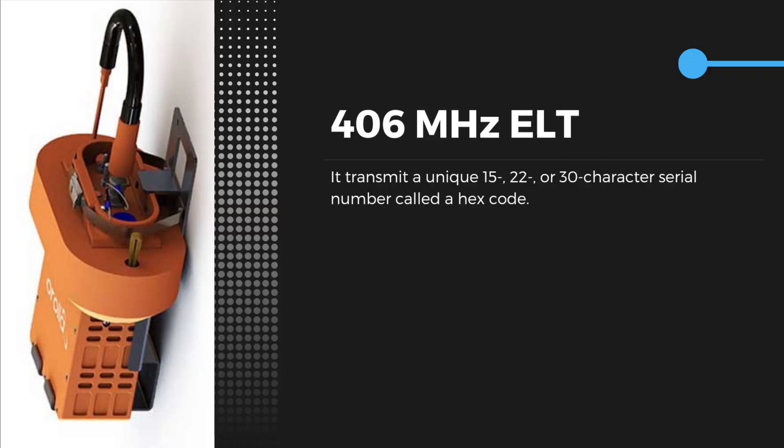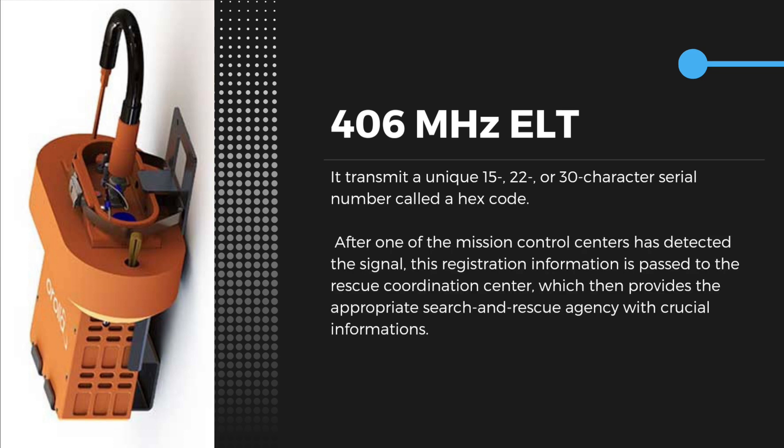The emergency beacon operating on 406 MHz transmits a unique 15, 22, or 30-character serial number also known as a hex code. When the beacon is purchased, the hex code should be registered with the relevant national or international authority. After one of the mission control centers has detected the signal, this registration information is passed to the rescue coordination center, which then provides the appropriate search and rescue agency with crucial information.